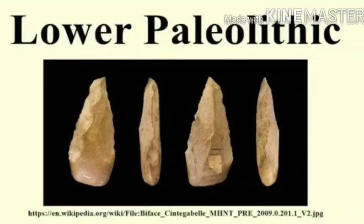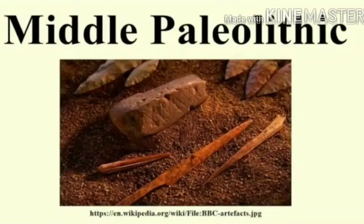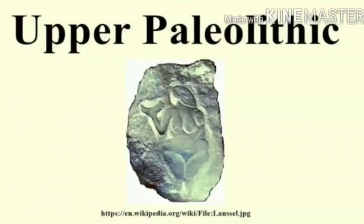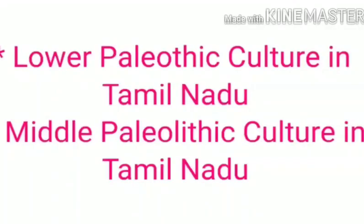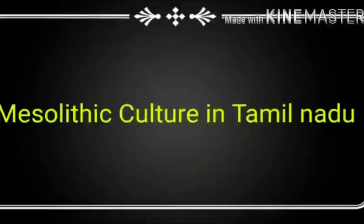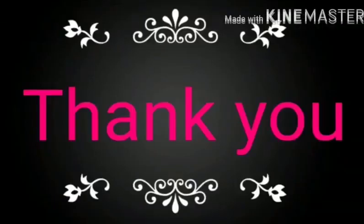In this video, we have seen about Lower Paleolithic Culture, Middle Paleolithic Culture, Upper Paleolithic Culture, and Mesolithic Culture. In the next video, we will see about Neolithic Culture and the beginning of agriculture, Prehistoric Tamil Nadu — that means Lower Paleolithic Culture, Middle Paleolithic Culture, and Mesolithic Culture in Tamil Nadu. Thank you students.